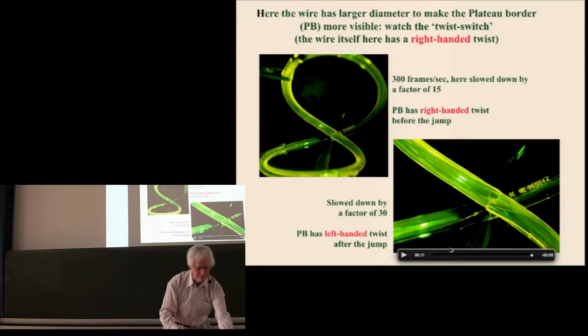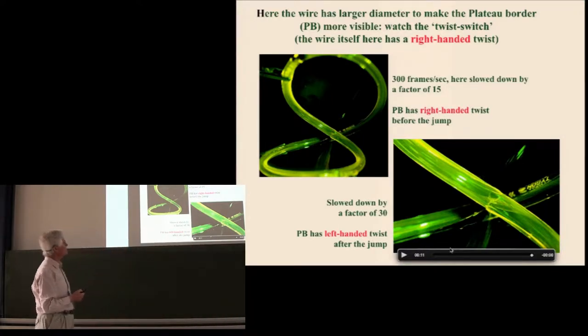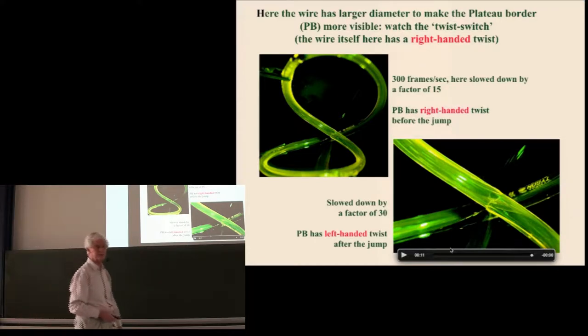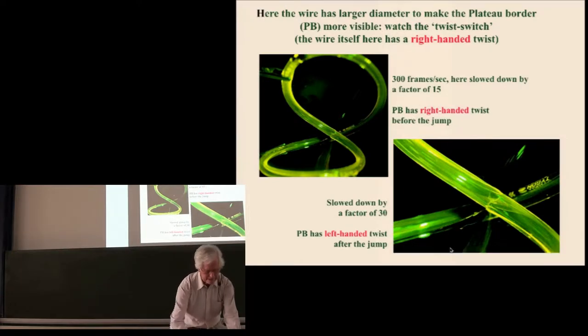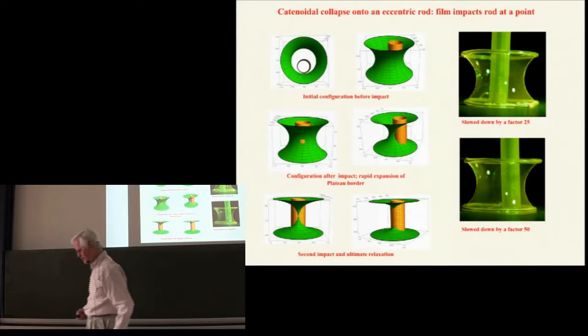So, that whole thing was 300 frames per second. This slowed by a factor of 15. I think this one slowed by a factor of 30, so it's a fairly rapid process in practice. And that plateau boundary had a right-handed twist before the jump and a left-handed twist after the jump when we analyze, when we look at that very, very closely. Now, there was a question also about the migration of the plateau boundary on a solid surface, and I mentioned we'd done this experiment of taking a catenoidal soap film suspended between two circles.